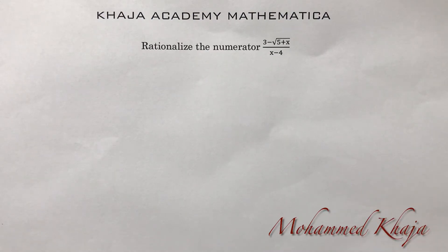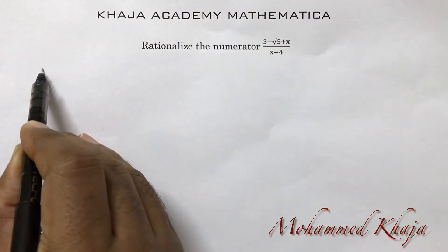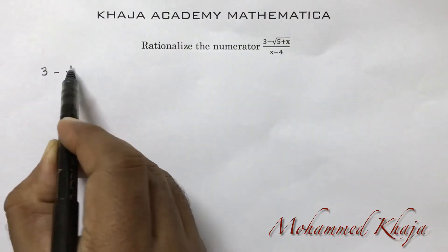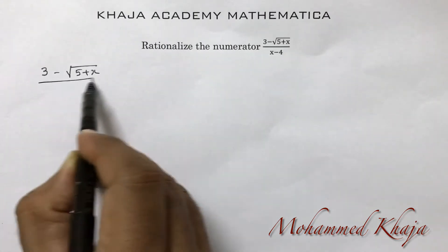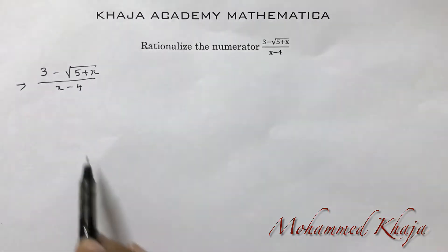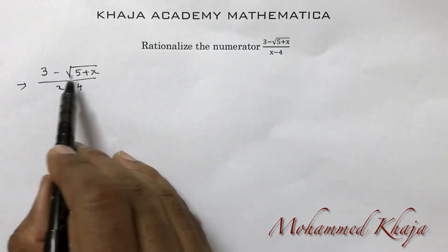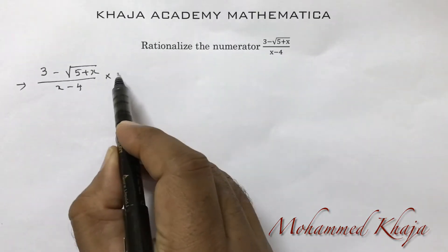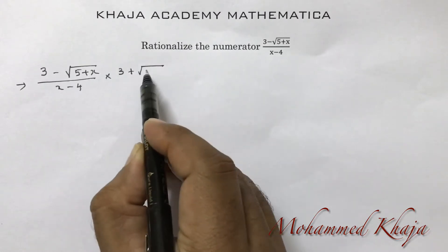Rationalize the numerator — Class 9 important problem from Number System or Real Numbers. Here we need to rationalize the numerator, which is 3 minus root(5+x), divided by x minus 4. To rationalize the numerator, multiply and divide by the conjugate 3 plus root(5+x).